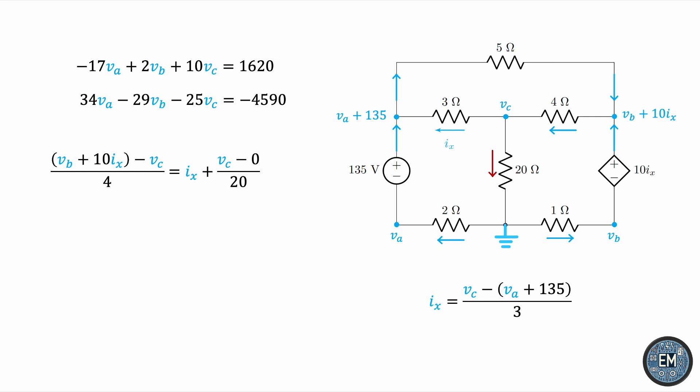Multiplying everything by 20 clears the denominators, expand, group-like terms, and deal with the IX in exactly the same way. Replace it by its equivalent, open up the brackets, clean up, bring like terms together. And this is the resulting equation in the three voltages, VA, VB, and VC.